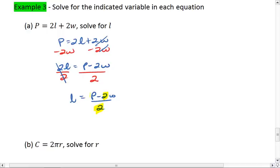For them to cancel, you would have to have a 2 in front of the P as well. So we're going to leave it just as is. That's our final answer.